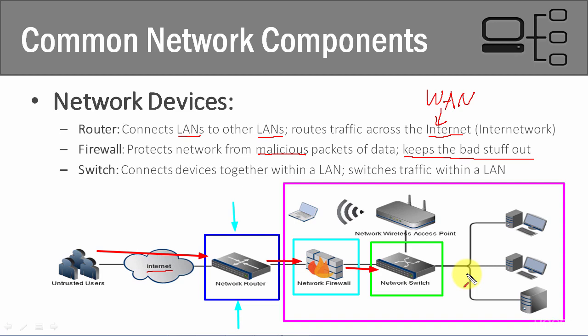A good analogy: remember when phone stations had operators who switched phone calls from one switch to another to connect people? That's really what a network switch does. If the data needs to go to our laptop, it's going to route it to the wireless access point which sends it to our laptop. The switch determines where data needs to go on the network, connecting everything together.